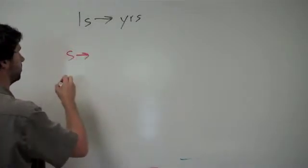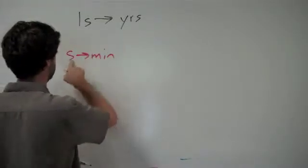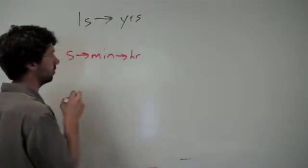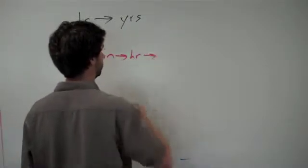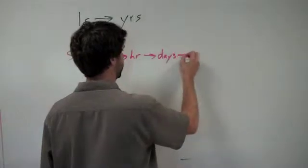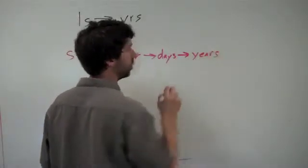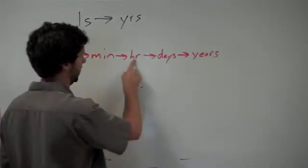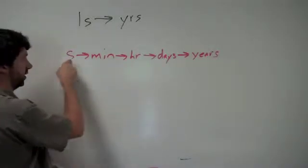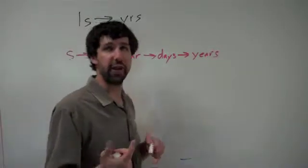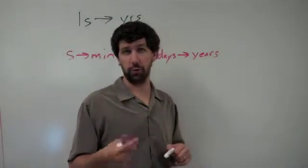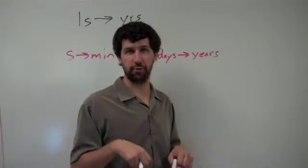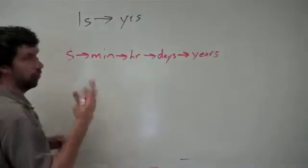If I start with seconds, I know I can get to minutes because there are 60 seconds in a minute. I know there are 60 minutes in an hour, so I can get to hours. From hours, I can get to days, and from days I can get to years. Some of you might know shortcuts — for example, there are 3,600 seconds in an hour. And those of you that know the musical RENT would know there are 525,600 minutes in a year, but only if you happen to know those offhand.